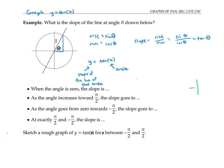Notice that if the angle is zero, the slope is zero. But as the angle increases towards pi over two, the slope gets bigger and bigger heading towards infinity. As the angle goes from zero towards negative pi over two, the slope is getting negative and heading towards negative infinity. At exactly pi over two and negative pi over two, we have a vertical line, and so the slope is undefined.